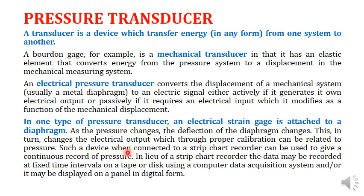An electrical strain gauge is attached to a diaphragm; as pressure changes, diaphragm deflection changes the electrical output, which through proper calibration can be related to pressure. Such a device connected to a strip chart recorder gives a continuous pressure record. Alternatively, data can be recorded at fixed time intervals using a computer data acquisition system, or displayed on a panel in digital form — enabling digital, graphical, or tabular reporting of pressure values.